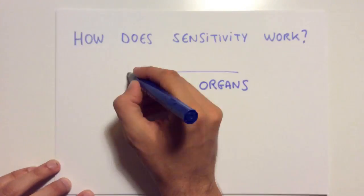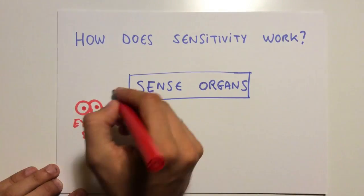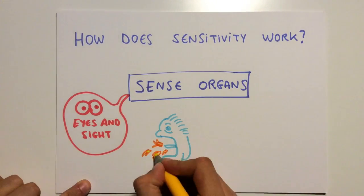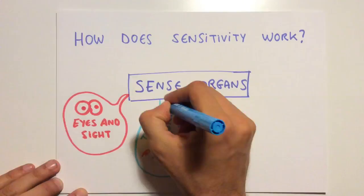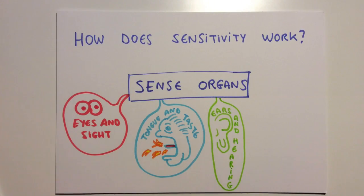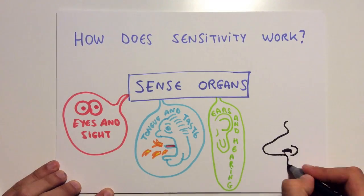First of all, sense organs capture information from the environment. These are called receptors, which are sensitive to stimuli. Sight, taste, hearing, smell and touch.